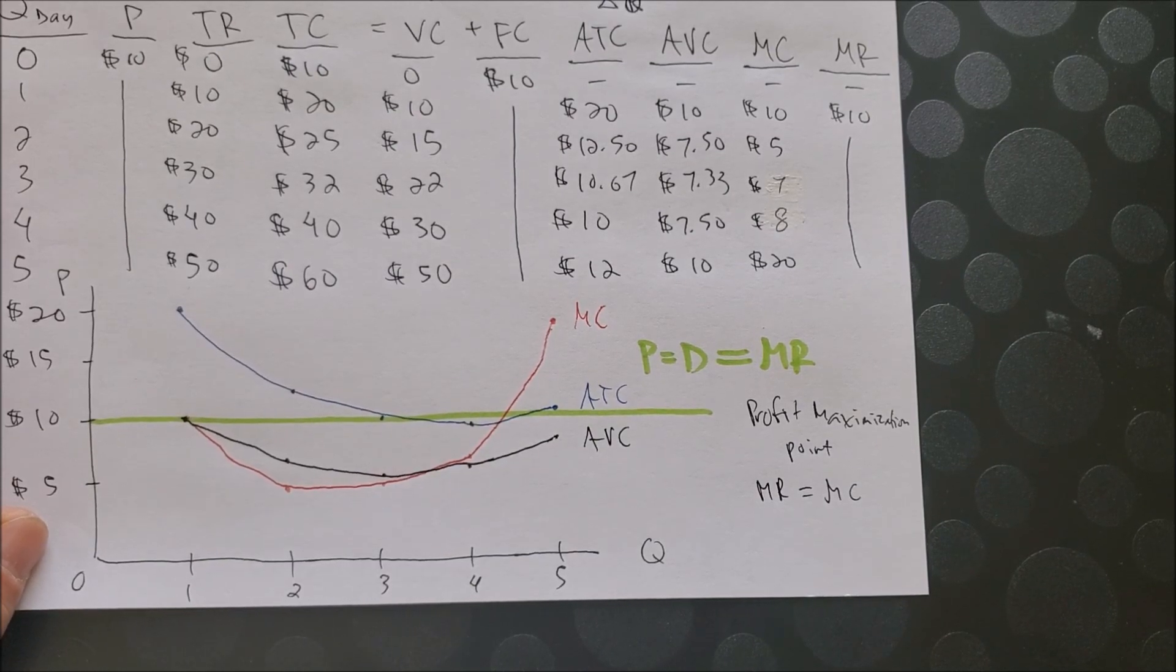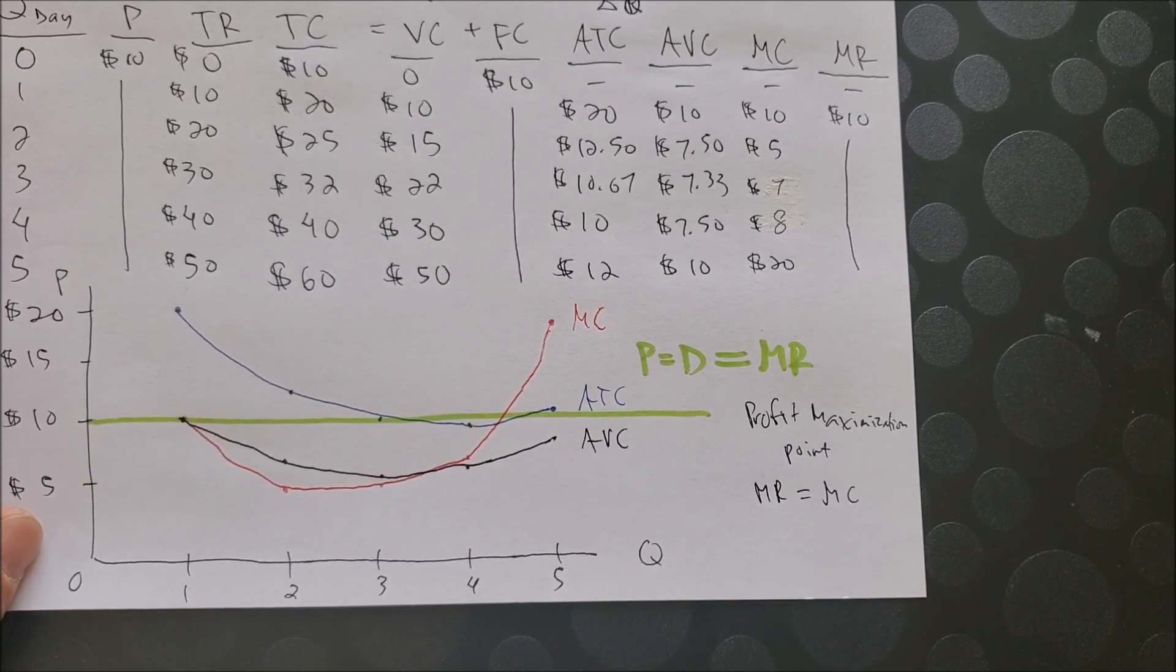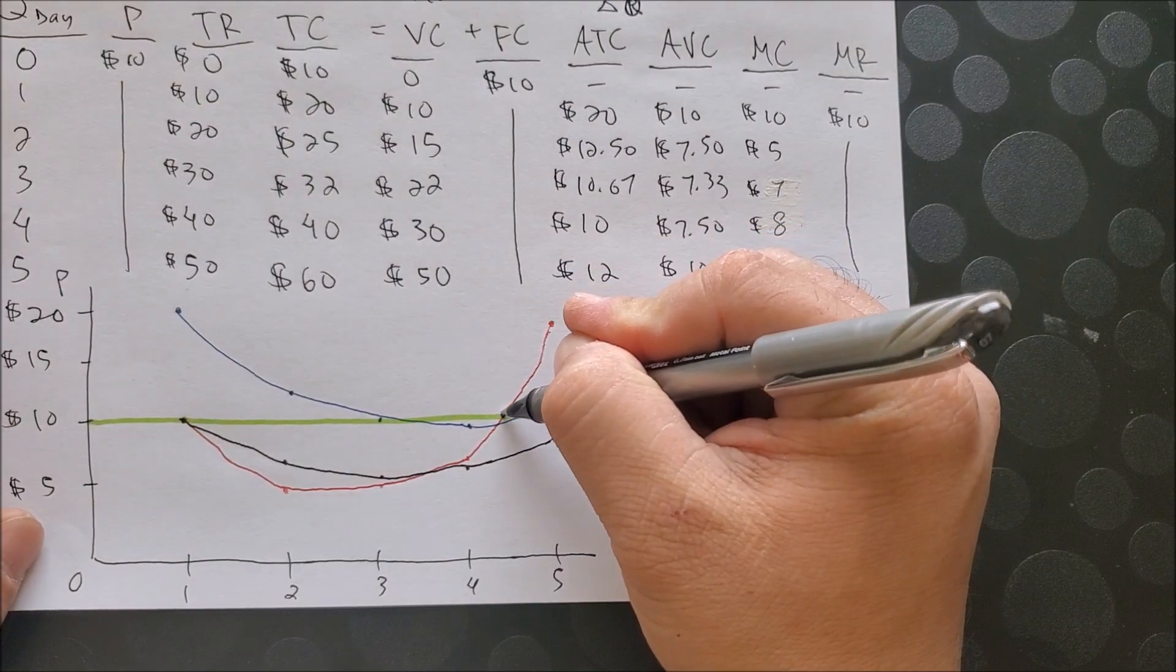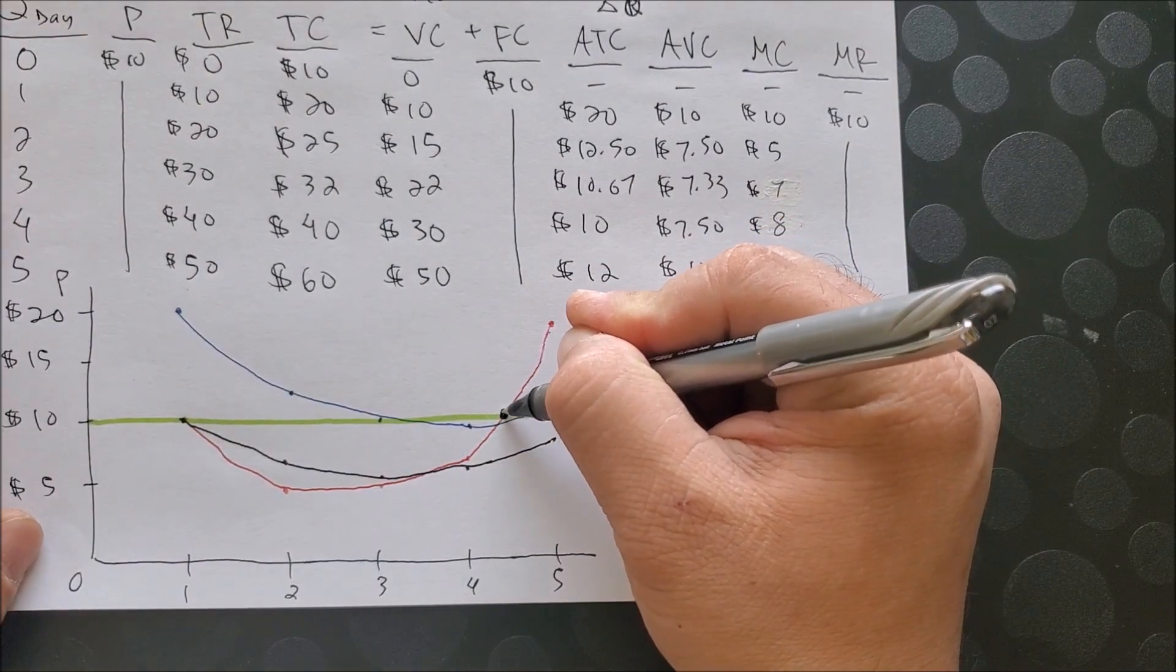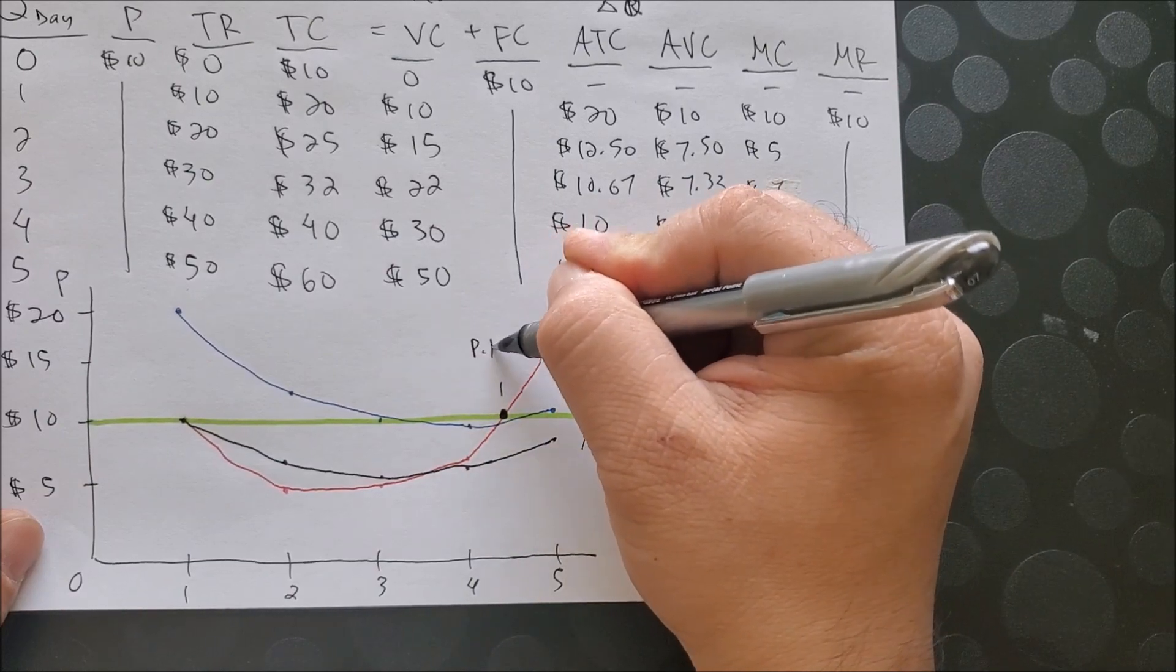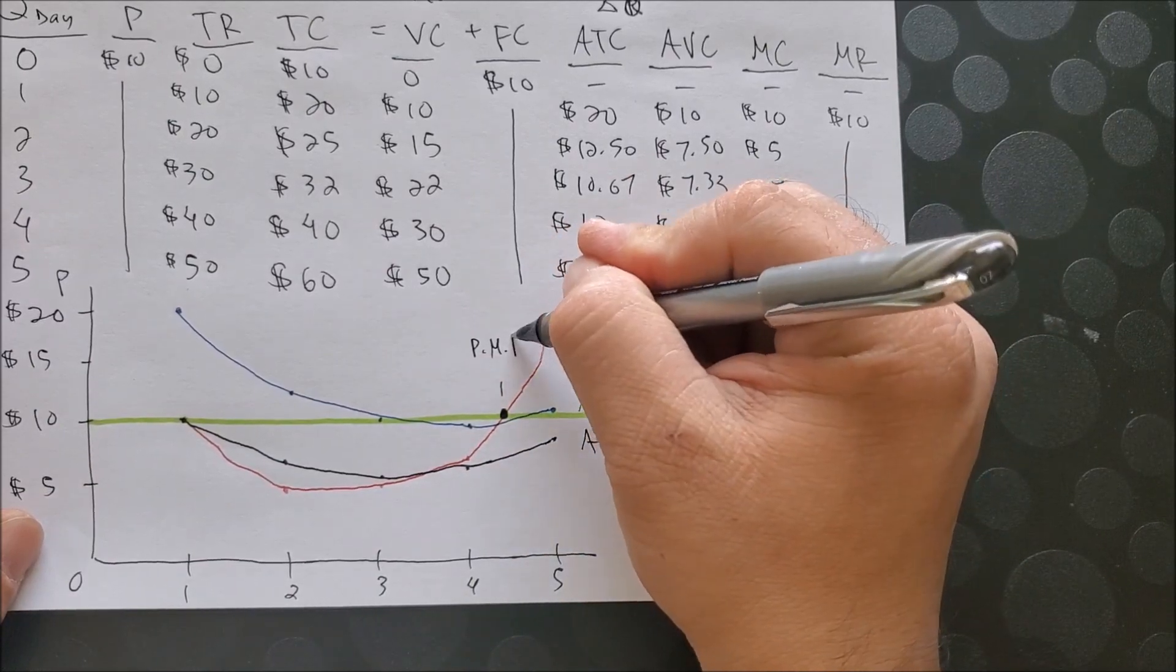Now, we can see MR equals MC somewhere along this point. I'm going to name that profit maximization point.